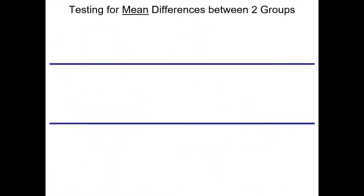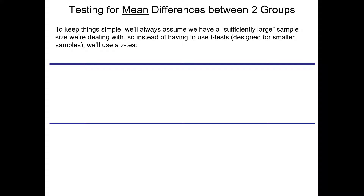To actually conduct a statistical test for the mean differences between two independent groups, we're going to assume that we're dealing with a sufficiently large sample size — roughly speaking, 30 participants in each of the two groups at least. So actually we're not going to be using the independent samples t-test. Rather, we're going to be using a z-test. Once you have a sufficiently large sample, the math gets a little more simple and we can use a z-test.